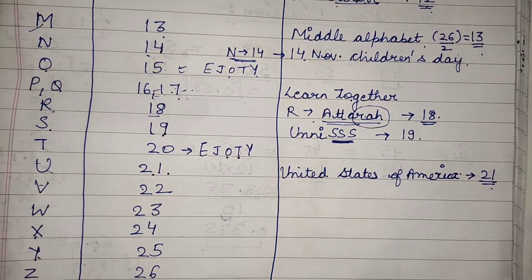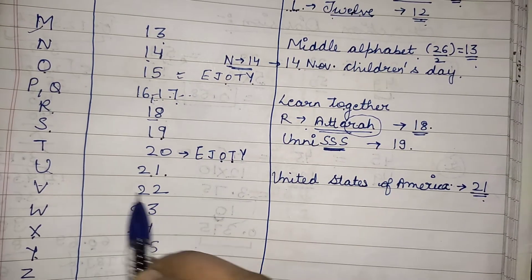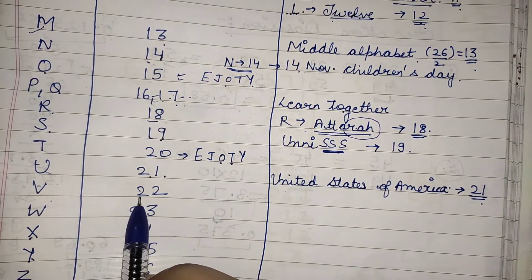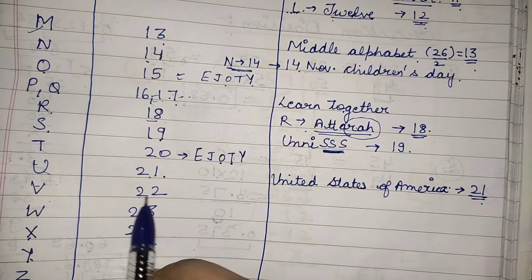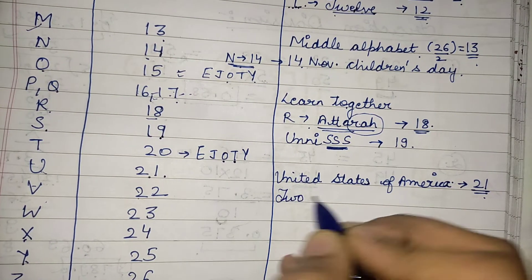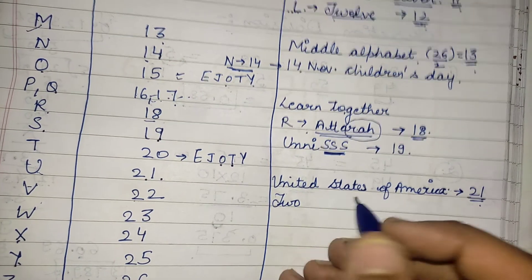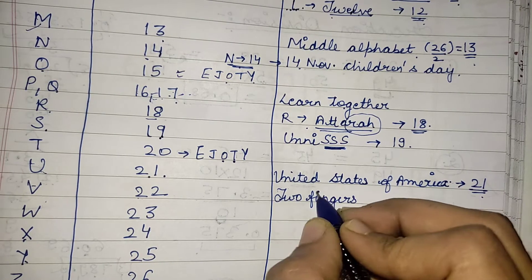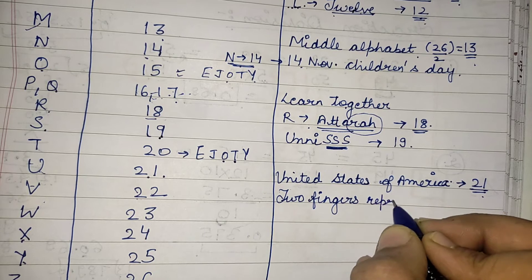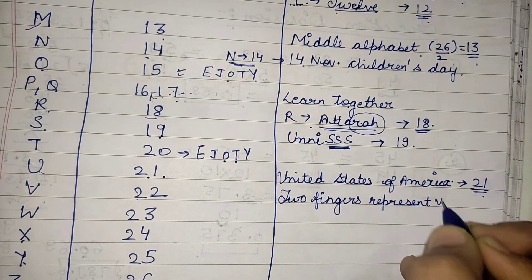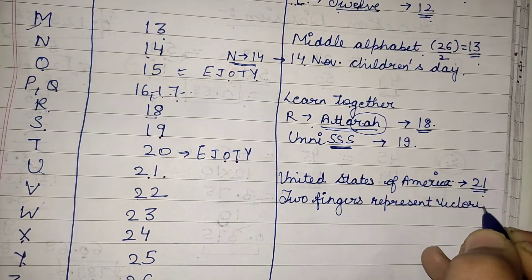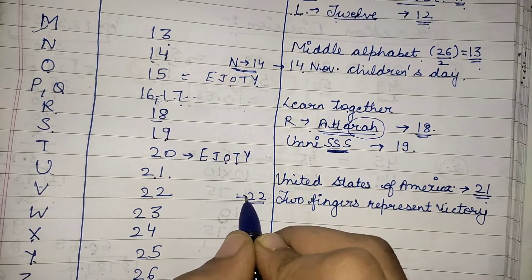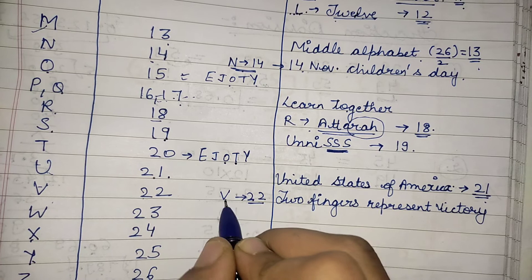Next, V is present at twenty-two. If I represent my victory, I use two fingers. Two fingers represent victory, so V for victory and two fingers means twenty-two — V is at the twenty-second position.